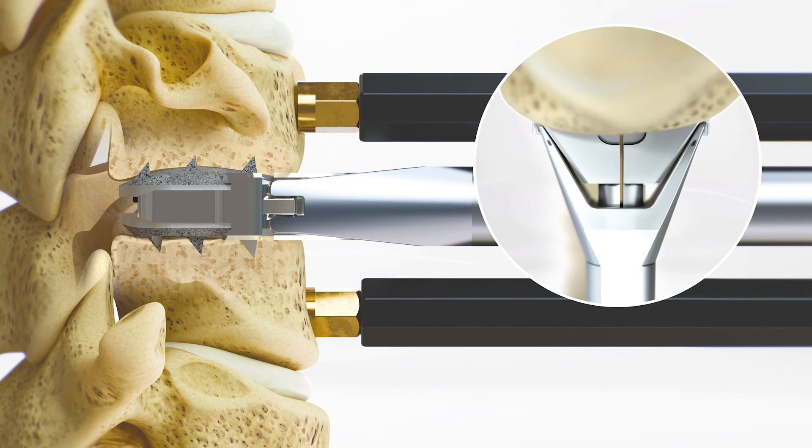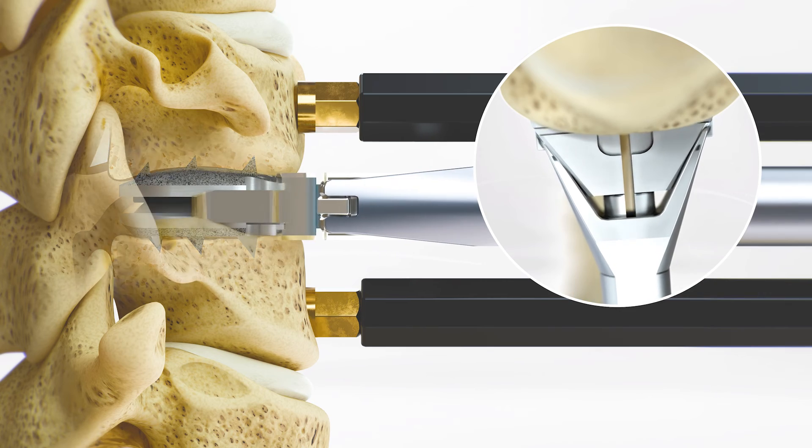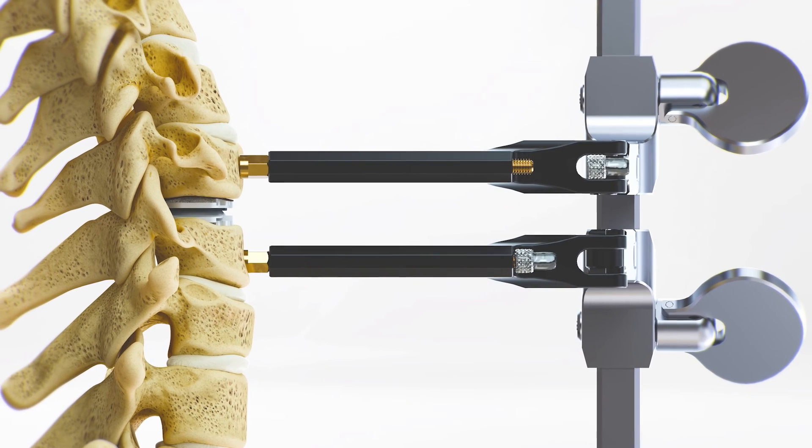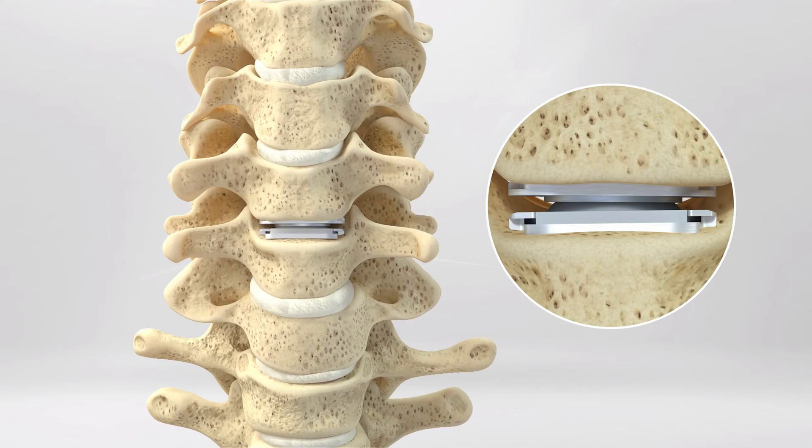Once the inserter is loosened, move the inserter laterally left to right a few times until the inserter disconnects from the implant. The inserter is then removed. The cervical retainer is removed and the final implant placement is confirmed.